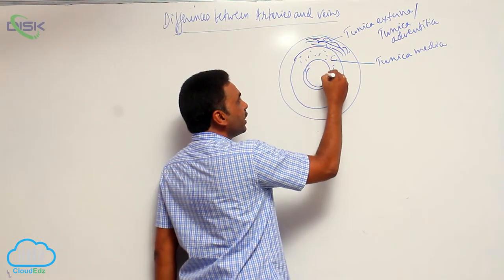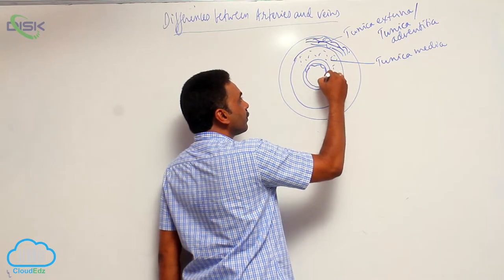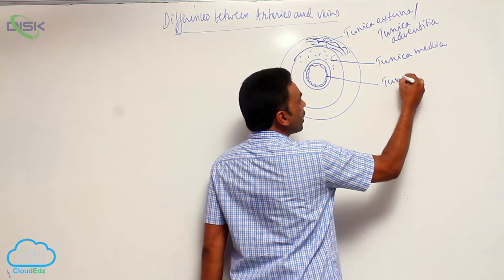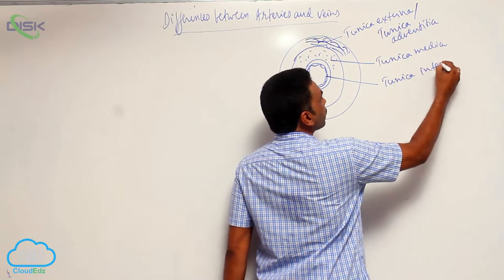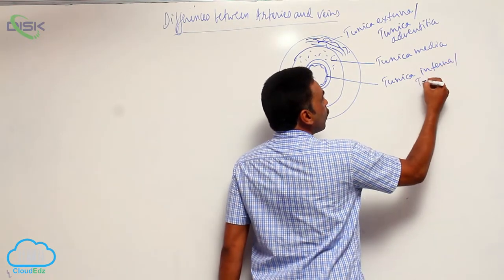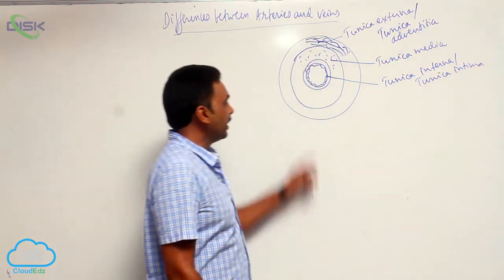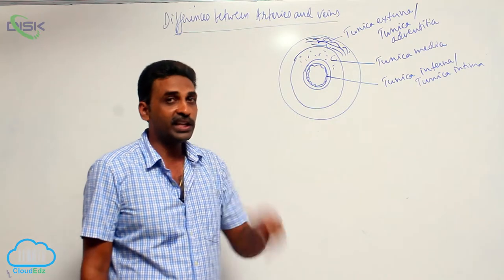And you will find the innermost layer. It is called tunica interna, also called tunica intima. It is the innermost layer of endothelium.